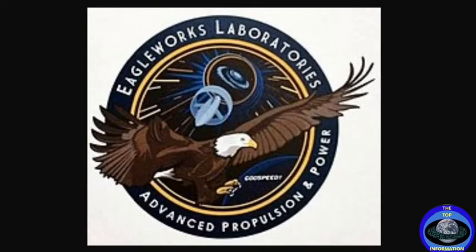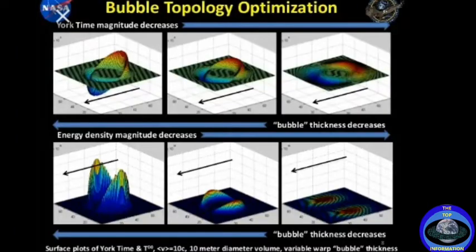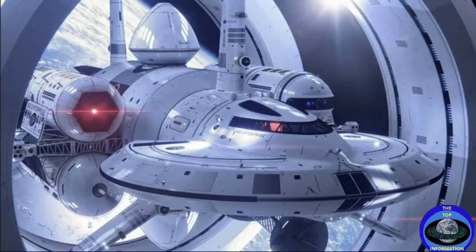NASA has created an advanced propulsion team called Eagle Works, who is working with the assumption that we could actually build a warp drive spacecraft. They have even created an artist's rendering of what a warp drive spaceship would look like, and they call it the Enterprise. The torus around the ship is what would create the negative energy field.